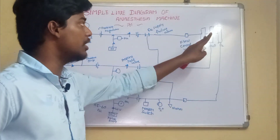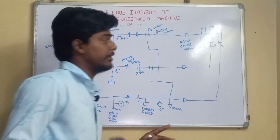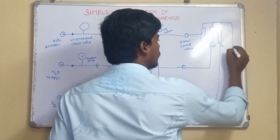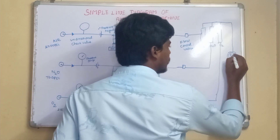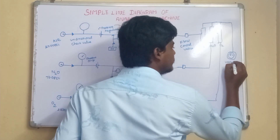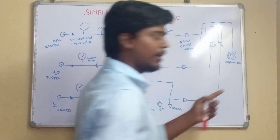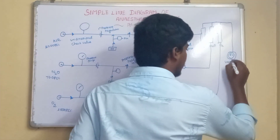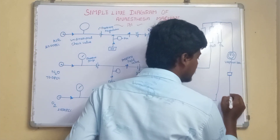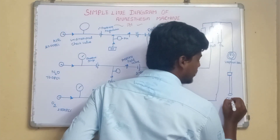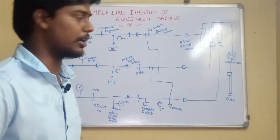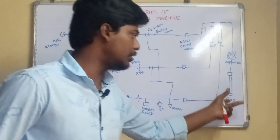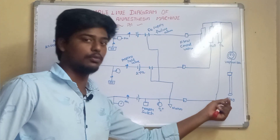The oxygen flow meter should be downstream in nature to prevent hypoxic mixture delivery. All flow meters together are connected to one important component called the vaporizer. The vaporizer vaporizes inhalation anesthetic agents. After the vaporizer, there is a pop-off valve, and then the last part is the common gas outlet, through which oxygen and all other medical gases travel.